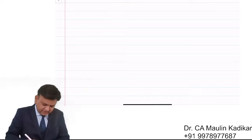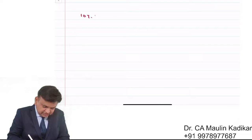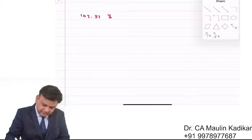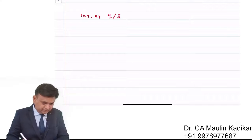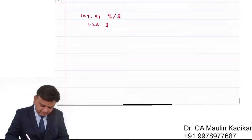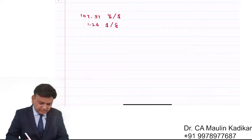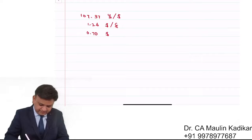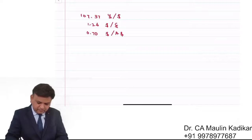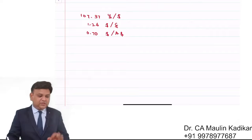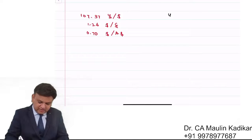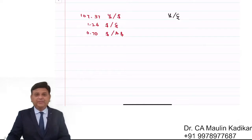We have the information: the exchange rate is 107.31 yen per dollar, then 1.26 dollar per pound, and 0.70 US dollar per Australian dollar. The price of pound is required to be found in yen terms — that is the question.